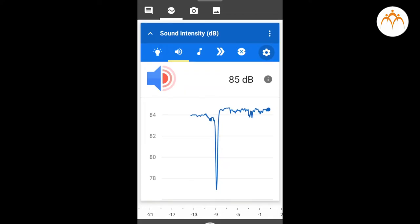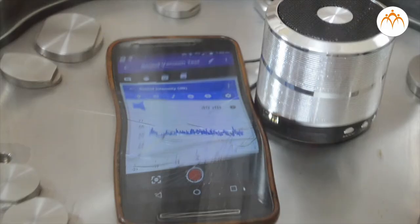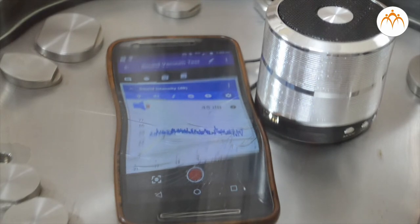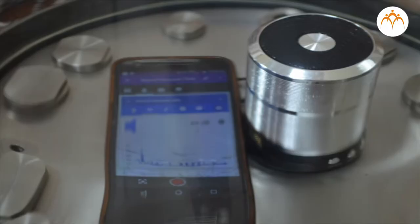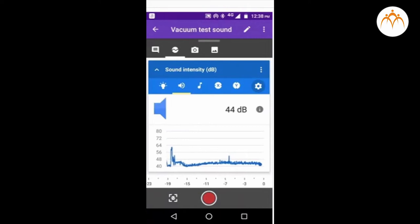The Science Journal app in the mobile indicates the intensity of sound produced by the speaker. We will place speaker and mobile phone inside the vacuum flask. When the pump is started, air is sucked out of the flask and partial vacuum is created. As time passes more and more air is sucked out of the flask.